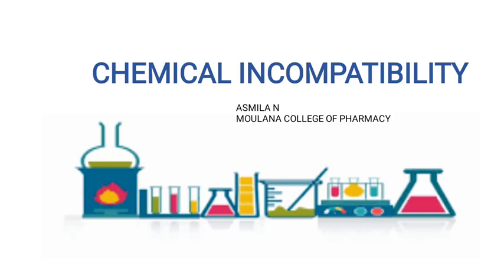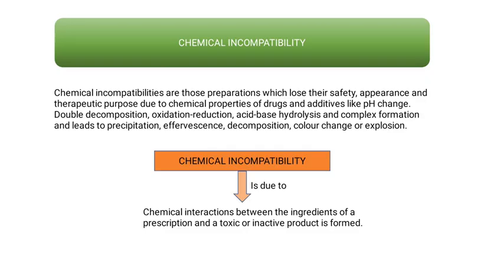Today we discuss the topic of chemical incompatibility. Chemical incompatibilities are those preparations which lose their safety, appearance, and therapeutic purpose due to the chemical properties of drugs. In case of physical incompatibility, it is due to physical properties of drugs and additives; in case of chemical incompatibility, it is due to chemical properties of drugs and additives.